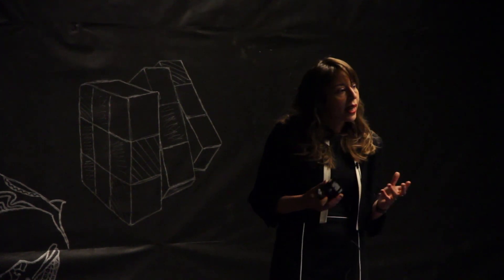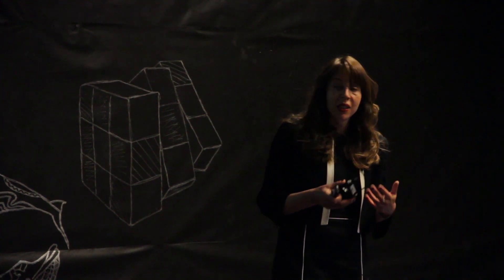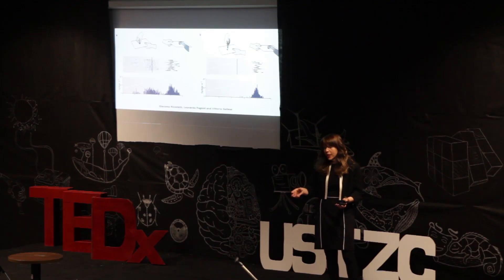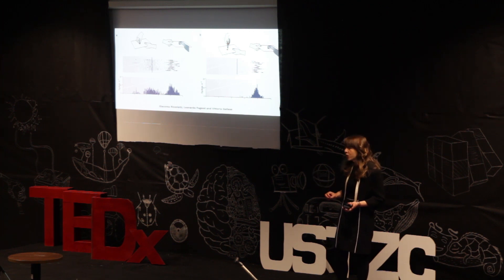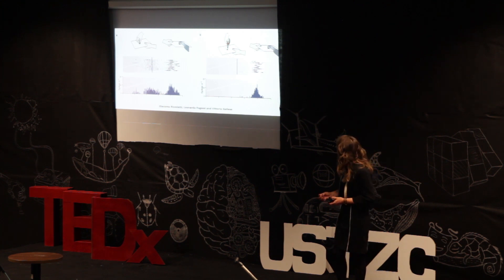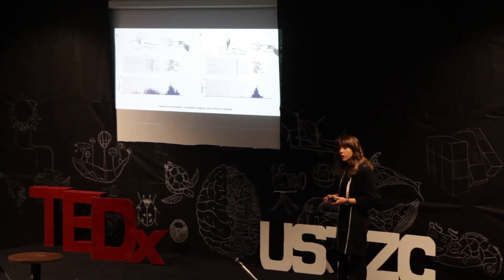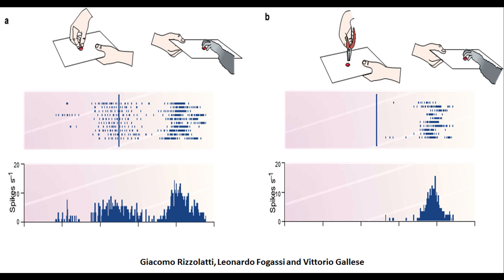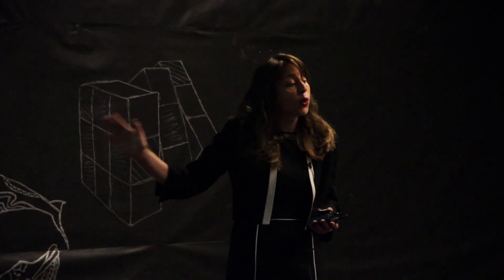Meanwhile, somewhere in Italy, researchers came up with an extremely interesting observation. I'm going to ask you to imagine me picking up a glass of water and drinking it. As you imagine or see me do that action, the neurons in your brain are firing as if you were performing that action yourself — it's in the cortex of your brain. Rizzolatti and his team did an experiment with a macaque monkey and discovered what we now call mirror neurons. When the monkey observed someone pick up a peanut, the same neurons fired in the monkey's brain as if the monkey itself was picking up the peanut. But when it was done by a mechanical claw or tweezers, the neurons didn't fire.